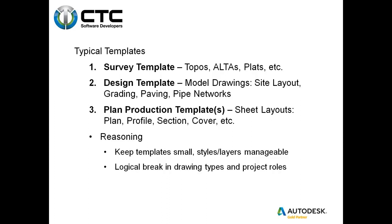The third template is plan production — nothing more than what's going to be plotted in paper space. It handles drawing size, viewport scale size, and when doing alignments, determines how many sheets it takes to fulfill that alignment. So again, keep the templates small; it's a lot easier to manage layers and styles. Create templates based on disciplines — you're not going to have one template encompassing both civil and surveying. Break it up based on project rules.